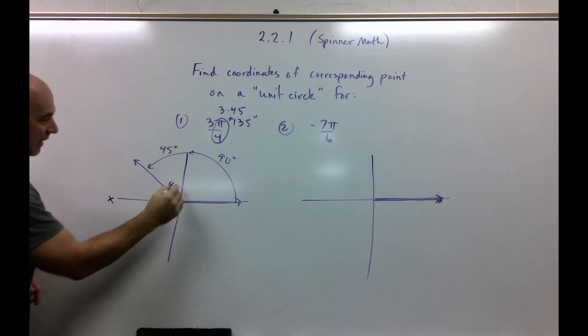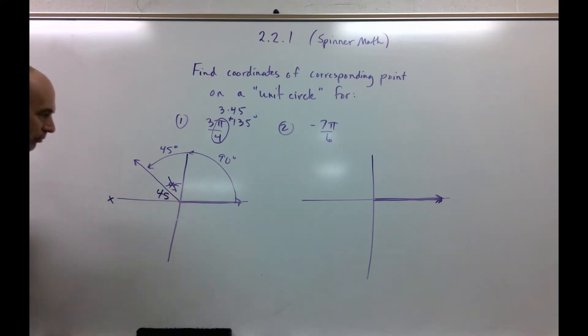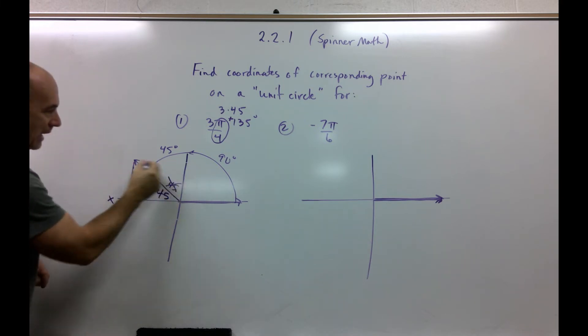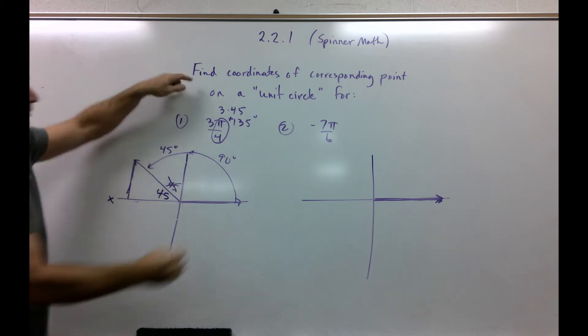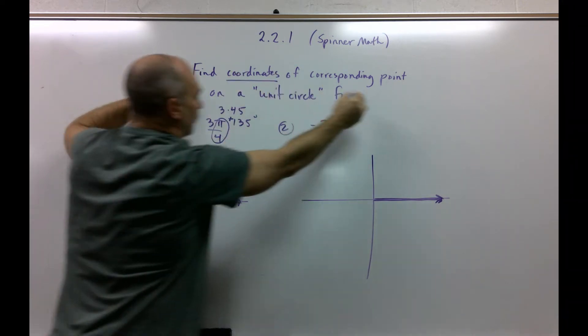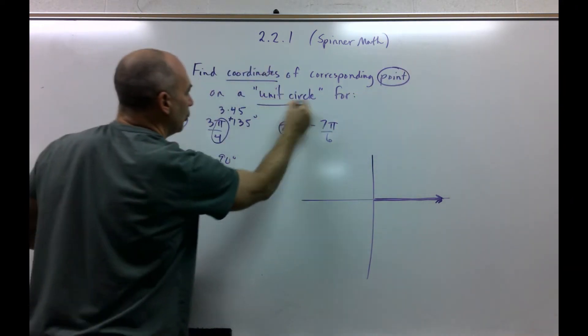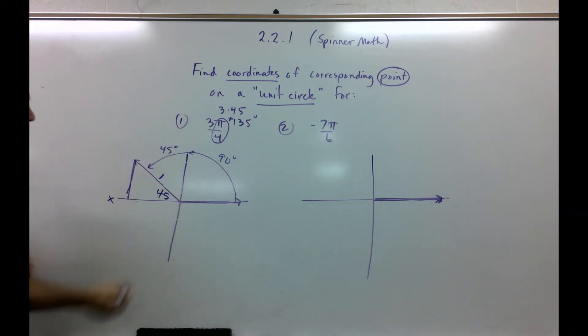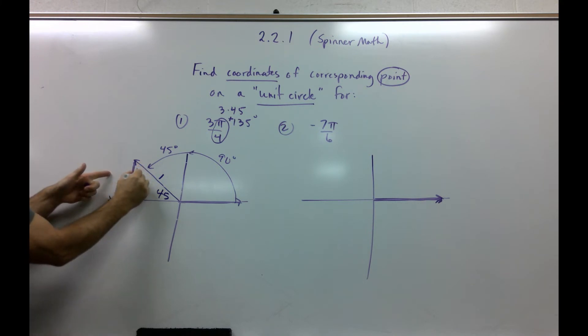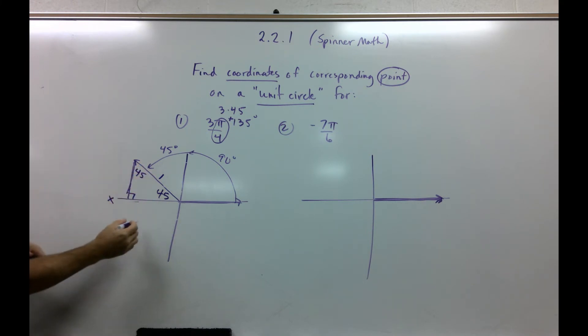Yes, this is 45, but that is not my reference angle. This is by definition. How do I create my triangle? I create my triangle by going back to the x-axis, not to the y. So this is the appropriate drawing here. And what they're saying is find the coordinates of the corresponding point of a unit circle. Meaning, the spinner is 1. And deal with this 45, 45, 90.